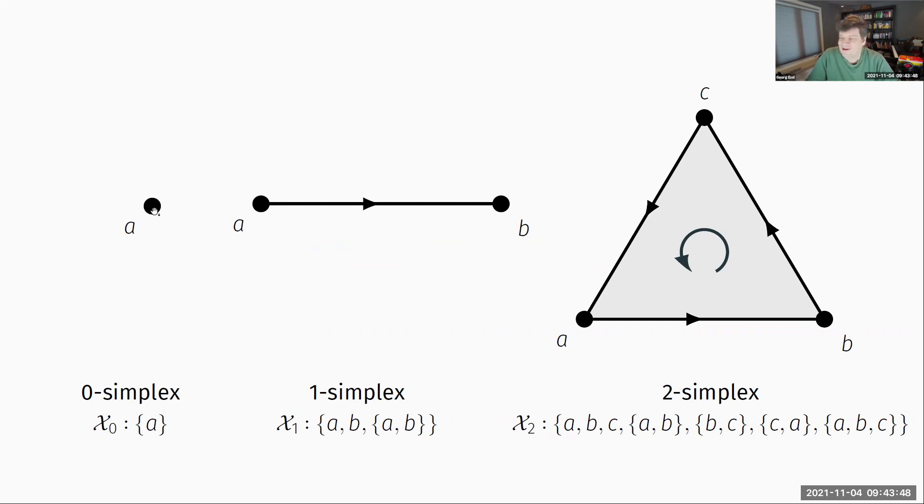A zero simplex you can think of just as a topological point. A one simplex is two zero simplices, two points that are somehow connected with a path. And a two simplex would be three points that define a topological area-like thing that is bounded by topological paths.